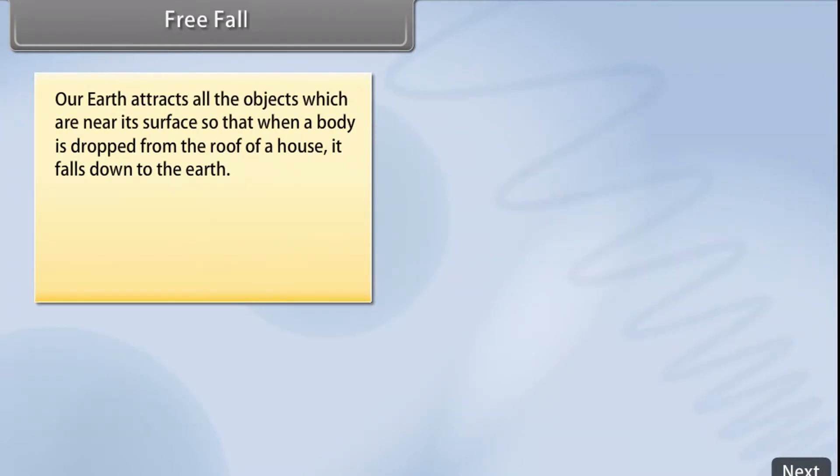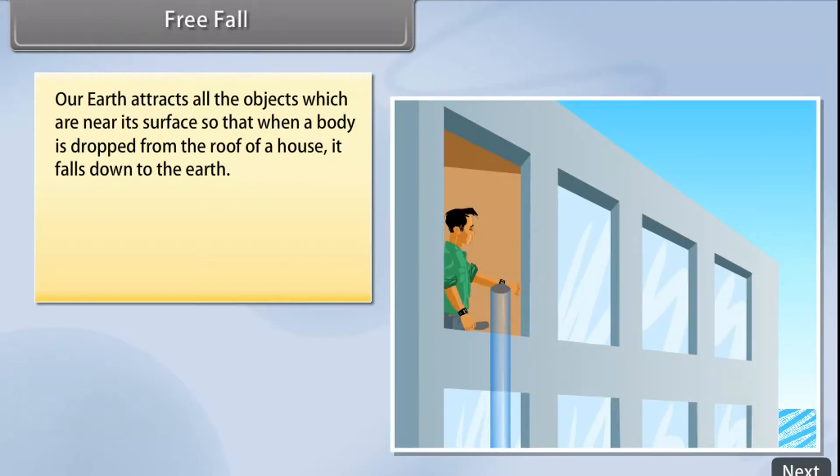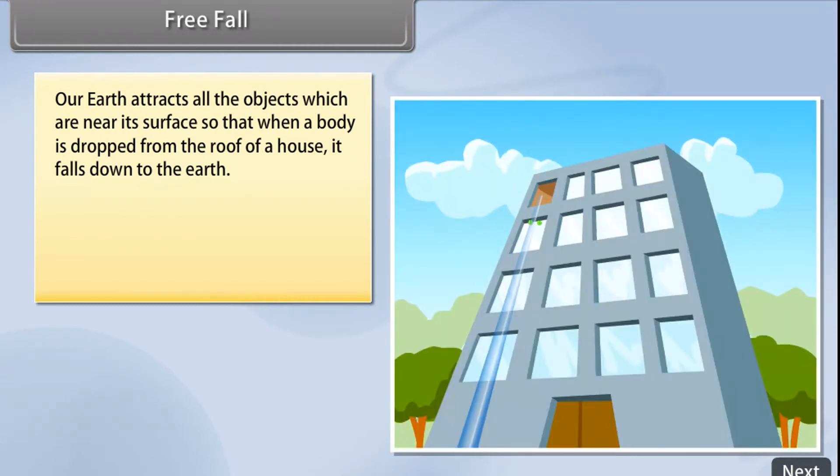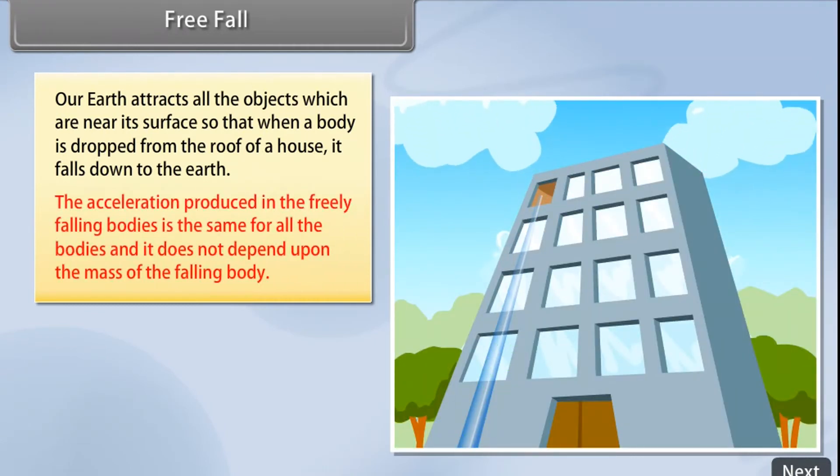Free Fall. Our earth attracts all the objects which are near its surface so that when a body is dropped from the roof of a house, it falls down to the earth. The acceleration produced in the freely falling bodies is the same for all bodies and does not depend upon the mass of the falling body.